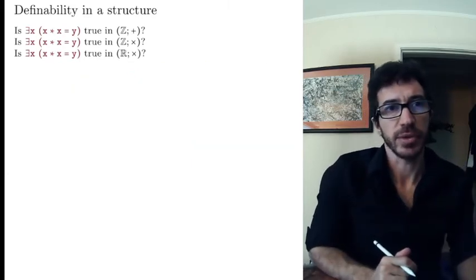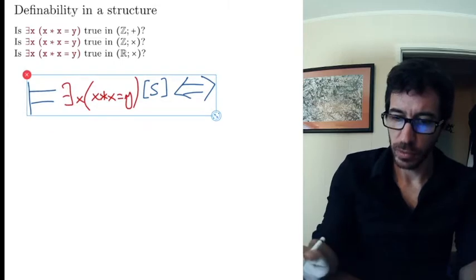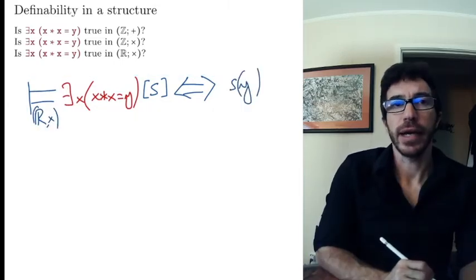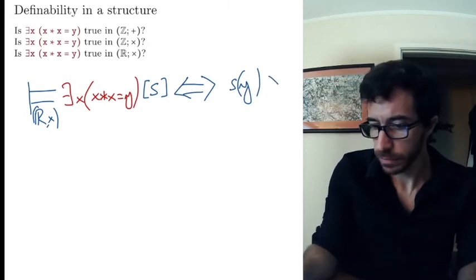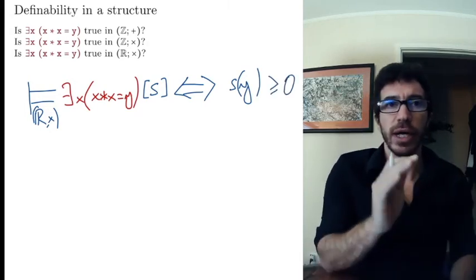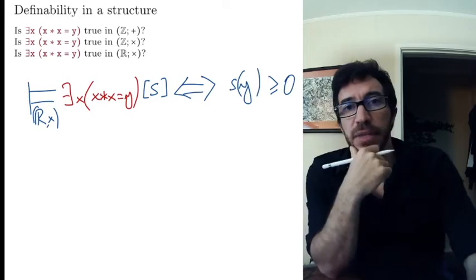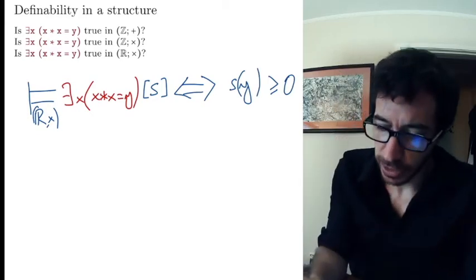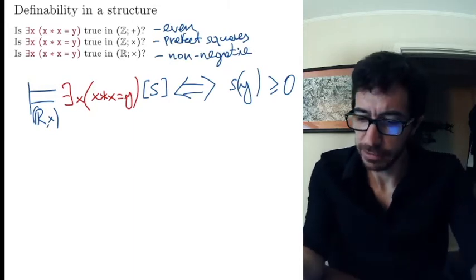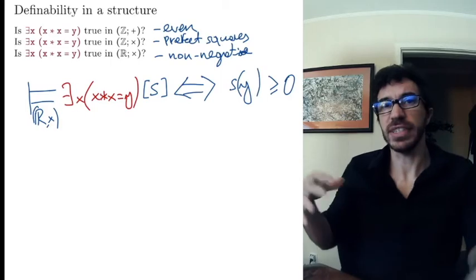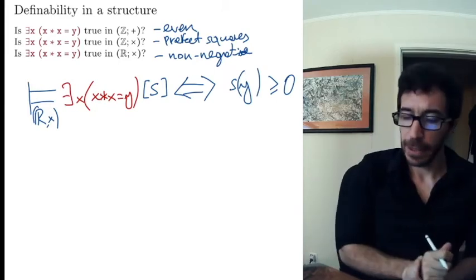What about the reals with times? Well, it's the same idea: y needs to be the square of something, and the real numbers that are squares of something are exactly the positive ones. So this is true if and only if y is a non-negative number; if y is negative there is no such x. So in the three cases we get even numbers, perfect squares, and non-negative numbers — the same formula in various structures is defining different sets.